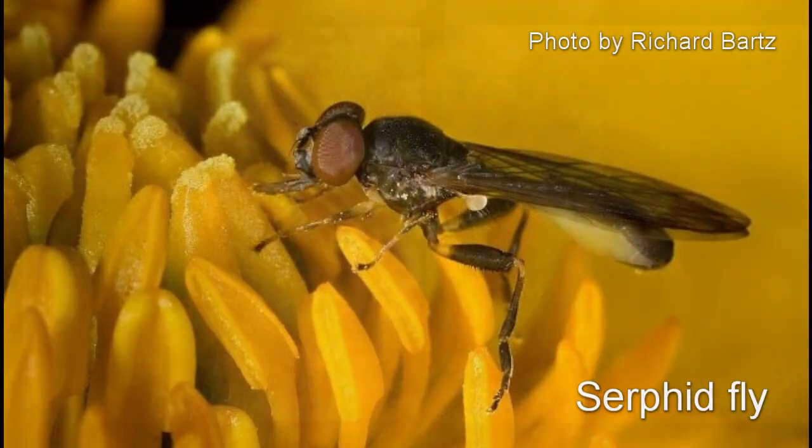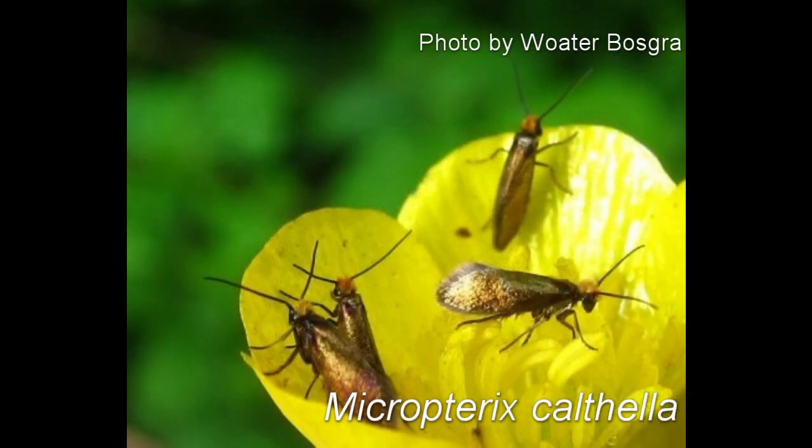Hoverflies, or syrphid flies, are one of its main pollinators, but there are a bunch of other insects that pollinate it too. There's a little moth in western Europe called Micropterix calthella that relies on marsh marigold in its life cycle, eating pollen from the anthers and having its caterpillars feed on the plant.